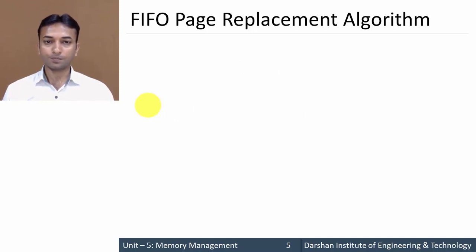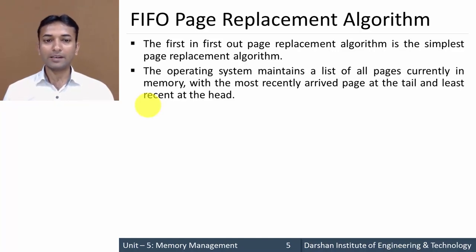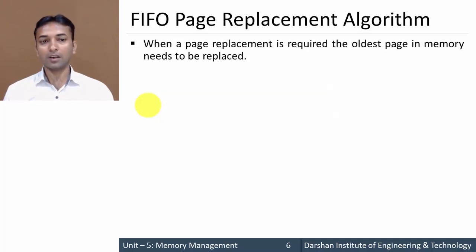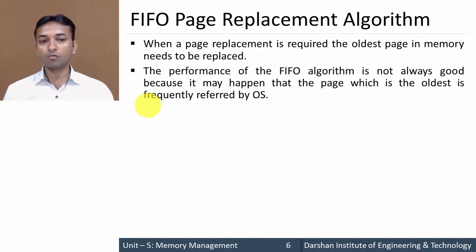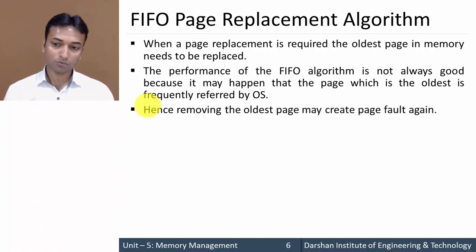The second algorithm is FIFO - First In First Out page replacement, which is the simplest page replacement algorithm. The operating system maintains a list of all pages currently in memory, with the most recently arrived page at the tail and the least recently arrived page at the head. On a page fault, the page at the head is removed and the new page is added at the tail. The oldest page in memory is always replaced. The performance of FIFO is not always good, because the oldest page may be frequently referenced, and removing it could cause another page fault.